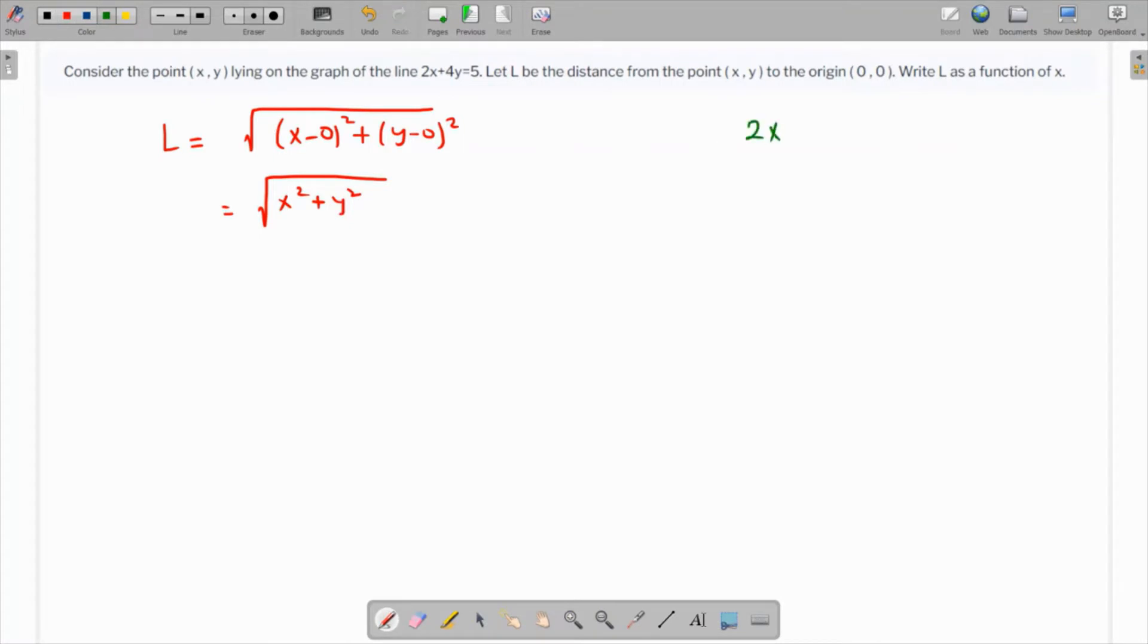We know that 2x + 4y = 5. This means that 4y = 5 - 2x, subtracting 2x from both sides. From here, y = (5 - 2x)/4. We'll substitute that back.